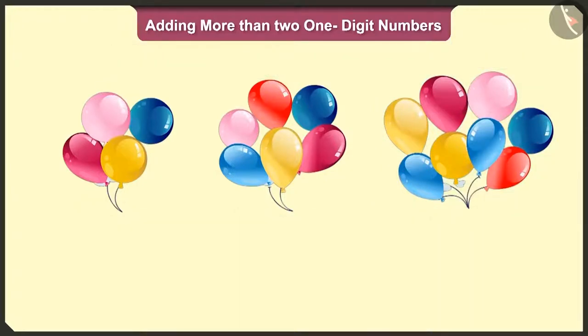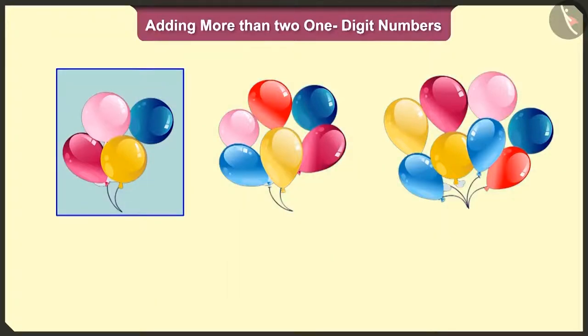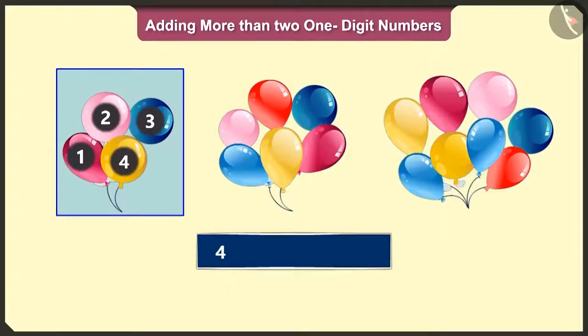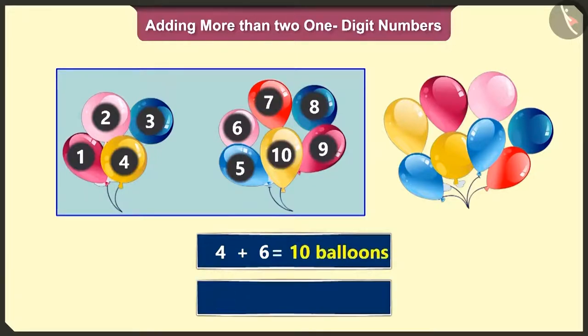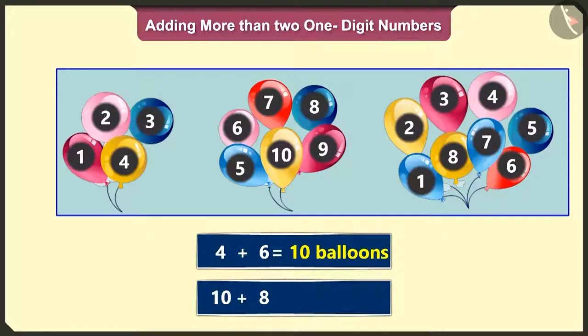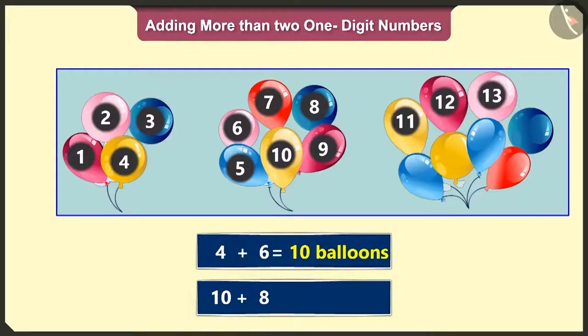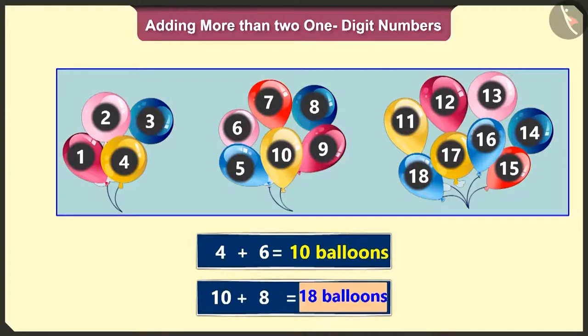Okay, so now tell me how many balloons are there in total? If we add four balloons of the first group to six balloons of the second group, then count after four will be five, six, seven, eight, nine and ten balloons. To these, we add eight balloons of the third group, then after ten count, eleven, twelve, thirteen, fourteen, fifteen, sixteen, seventeen and eighteen balloons is what we have. So the total number of balloons is eighteen.